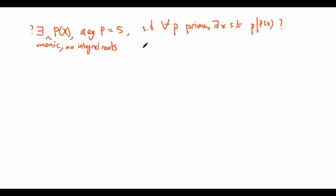Hi guys, it's Daniel here, and today we're going to talk about a very famous problem from folklore. It goes like this: does there exist a monic polynomial p(x) with degree 5, with no integral roots, such that for all primes p, there exists an x such that p divides p(x)?